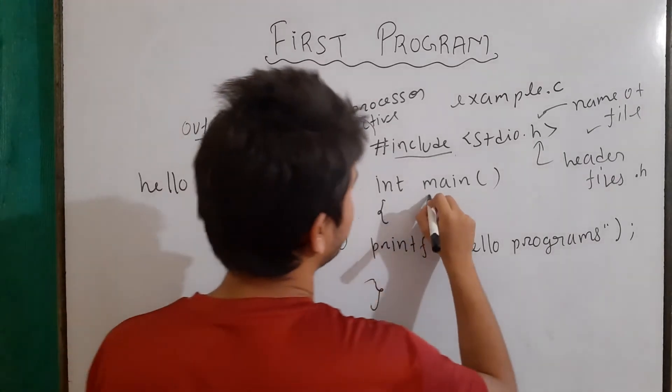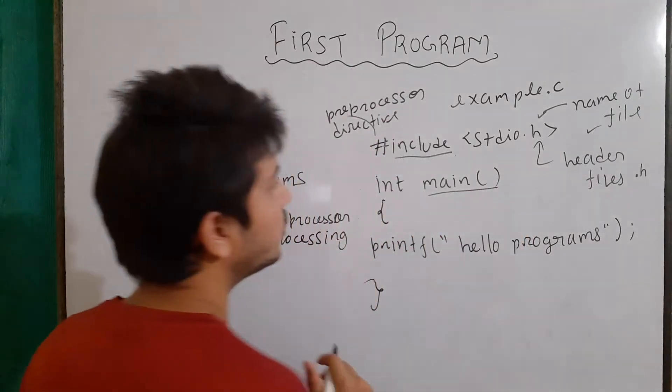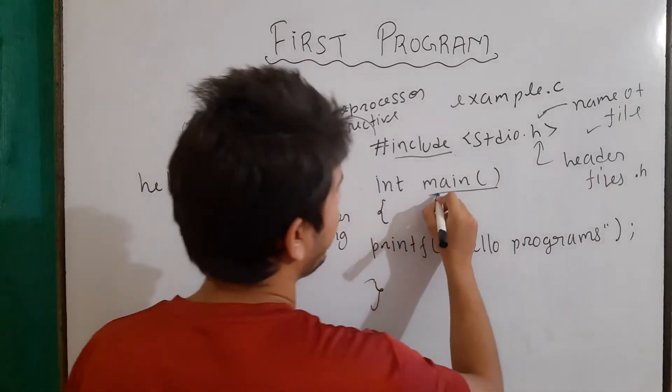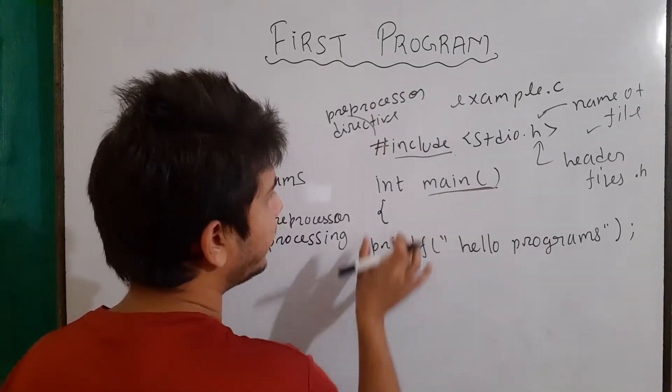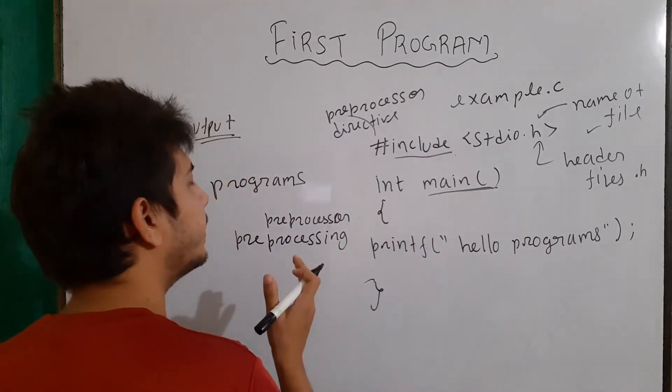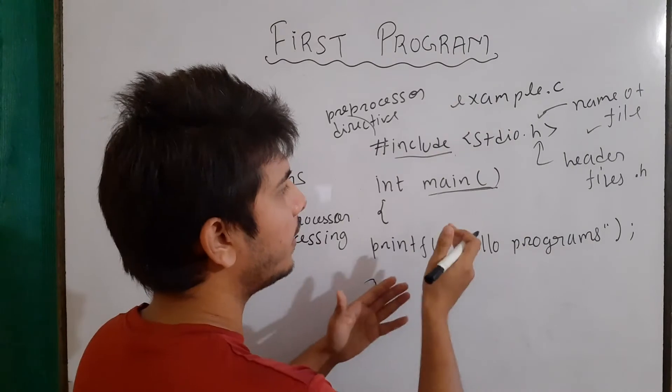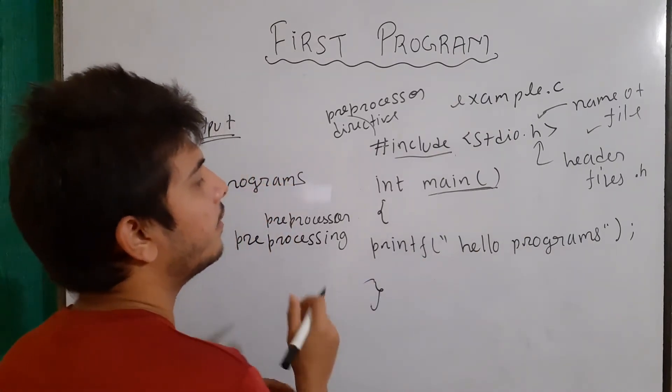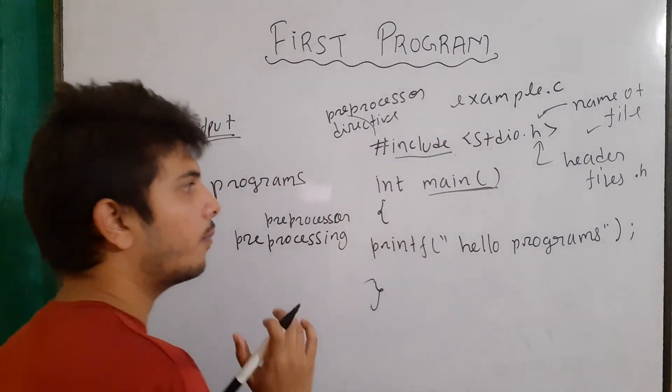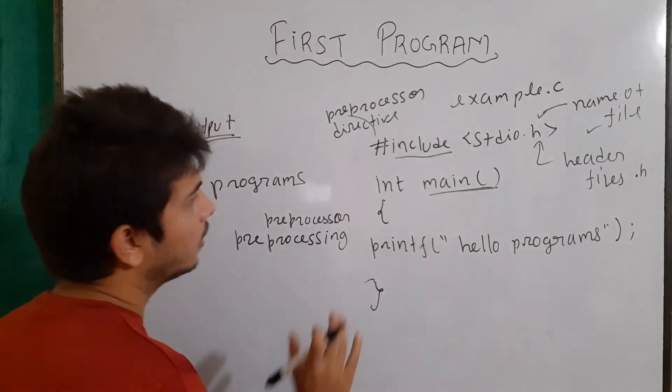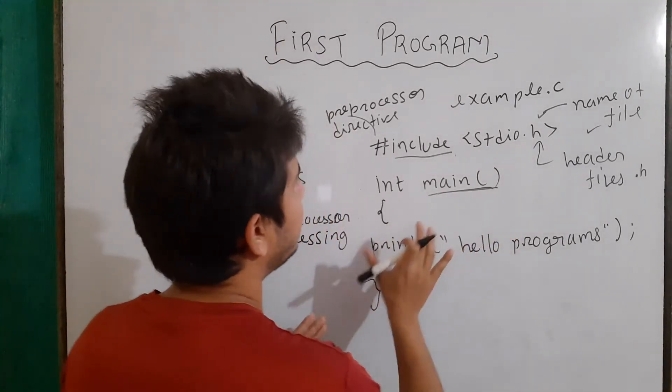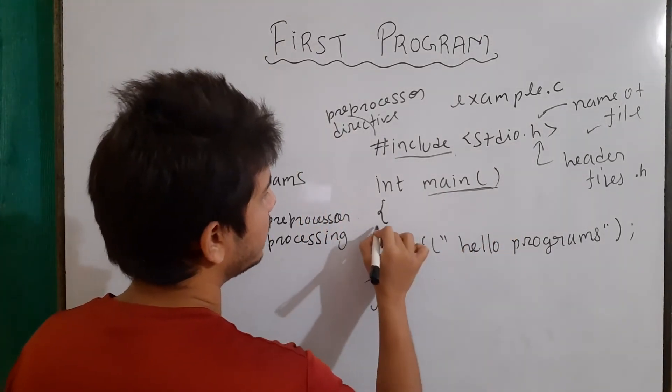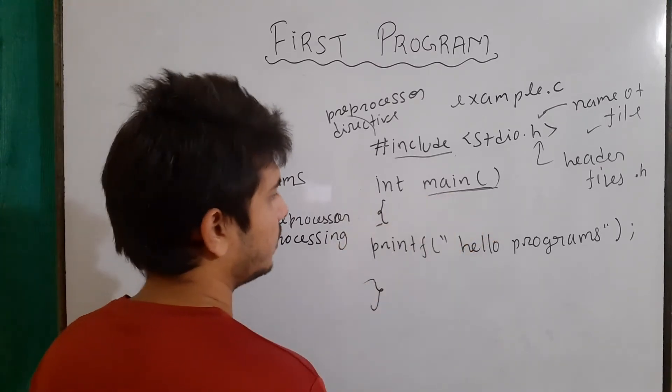Then we have main function. Now, basically the execution of our program start from the main. And integer is the value which will be returning back to who is calling our main function. Basically, some value will be returned to our operating system. So, this is about the main that the execution of our program start from its body, from the body of our main function.